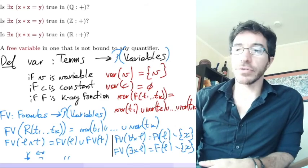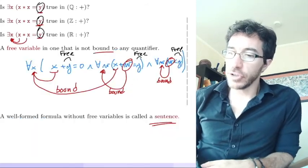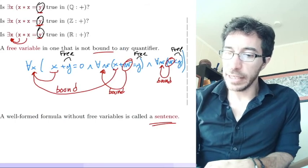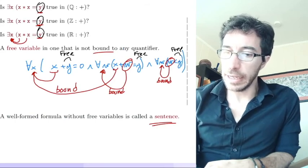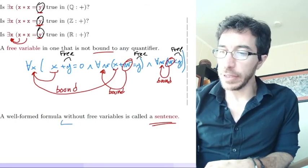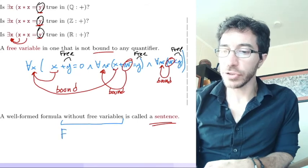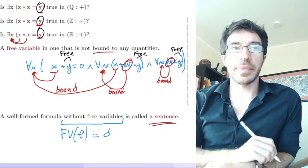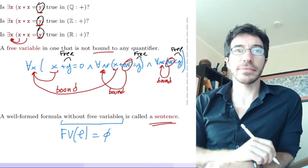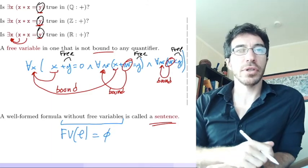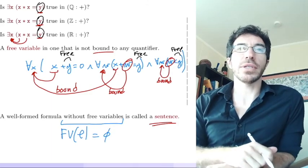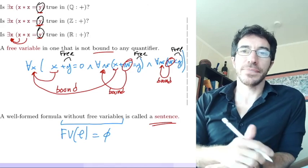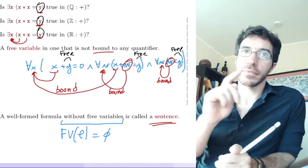Now we have a formal definition. When we say a formula has no free variables, we mean the set of free variables is the empty set — and those are the formulas called sentences. Next video we'll continue with variable assignments.